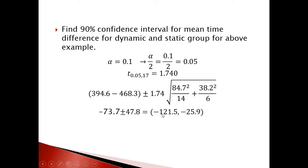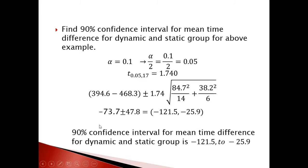The lower bound is −121.5 and the upper bound is −25.9. Therefore, the 90% confidence interval for the mean time difference between the dynamic and static group is (−121.5, −25.9).